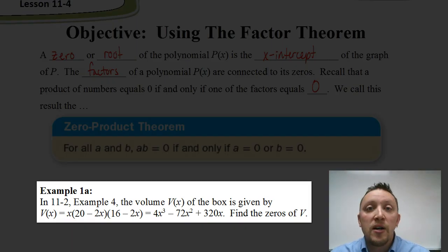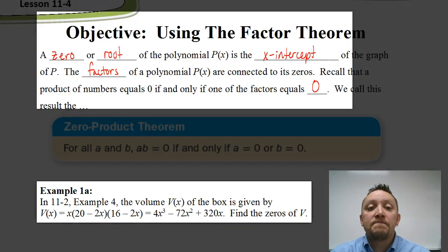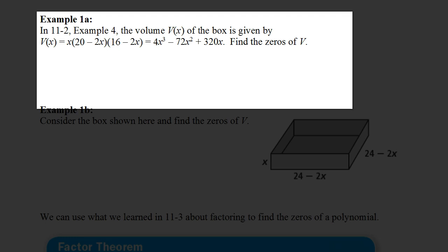Let's look at this example, then we'll move on to the factor theorem. We have x times the quantity (20 minus 2x) times the quantity (16 minus 2x). That is the factored form for the volume of a box. In standard form it would be 4x³ minus 72x² plus 320x. We're going to find the zeros of this polynomial. The first step is to use the factored form, which they've done for us, and then take each of those factors and set them equal to zero. Starting with the first one, we would just have x equals zero.